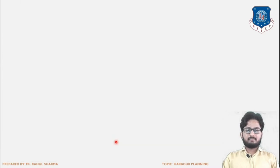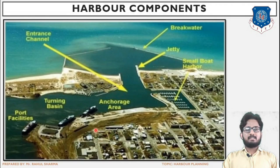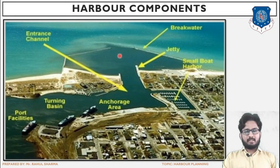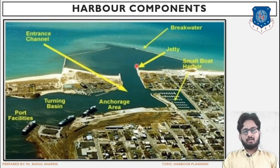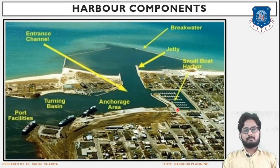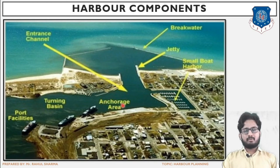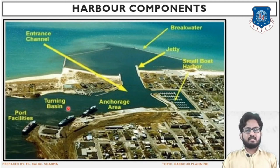So basically those are the functions of each harbour component, and the figure reflects that the components are placed in cohesion with each other. Next, another figure represents the various harbour components. In short: the entrance channel is for entering the harbour; the breakwater is on the periphery for dissipating wind and wave energy; the jetty is perpendicular to the shore for handling low-weight cargo; the small boat harbour is a space specifically for small boats; the anchorage area is for tying up the ship; and the turning basin is the space for manoeuvring operations.